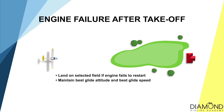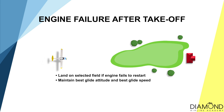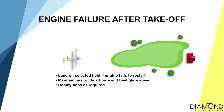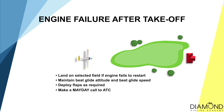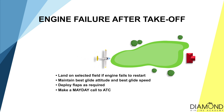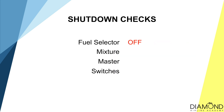Maintain the best glide attitude and speed. If it seems the aircraft is a bit high for the field, lower flaps as required. And if time permits, make a mayday call to ATC, notifying them that we are in a distress situation and requesting their assistance. If time permits, carry out the shutdown checks to minimise the risk of fire: fuel selector off, mixture off, master off, and all switches off. Then we will proceed with the emergency landing.